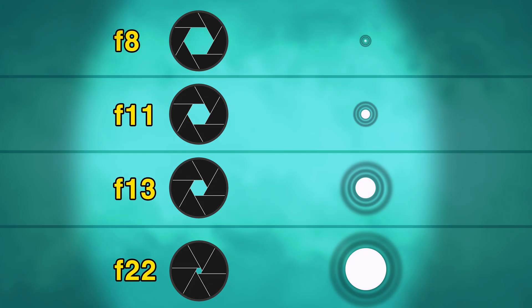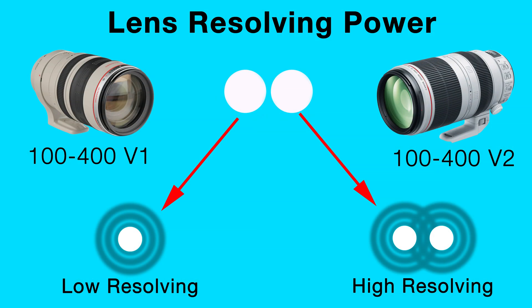As we stop the aperture down, those airy disks begin to overlap, creating the softness that we see due to diffraction. Image softness can also come from low resolving power lenses, which would see two discrete points of light as one.